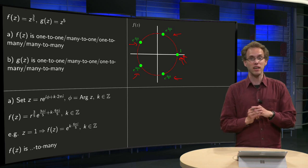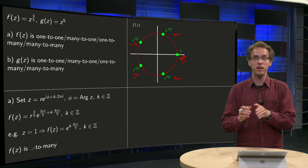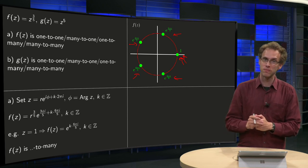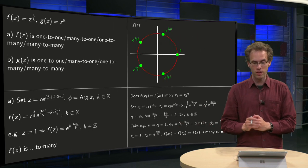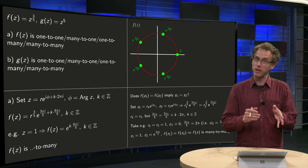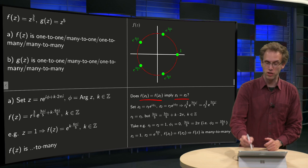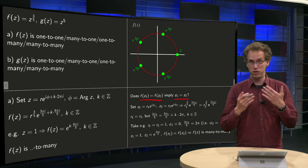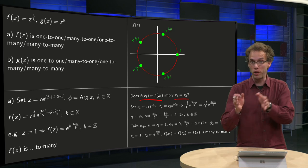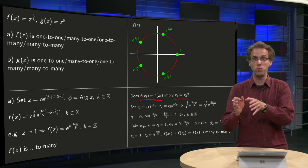So next question. Is this function f one to many or many to many? Well, let's give it a try whether it's one to or many to. So if you have f of z1 equals f of z2, does it imply z1 equals z2? If it does, then our function is one to many, and if it doesn't, our function is many to many.